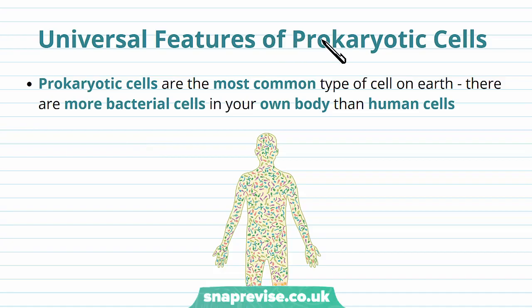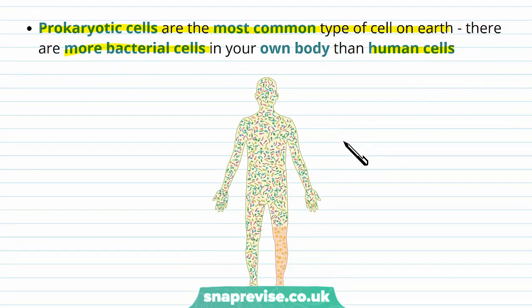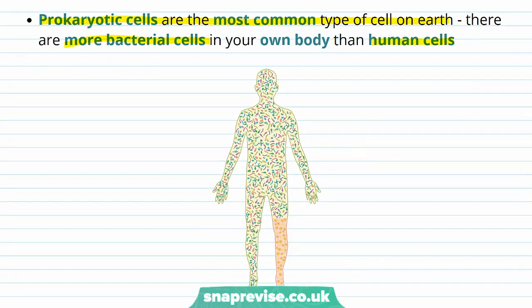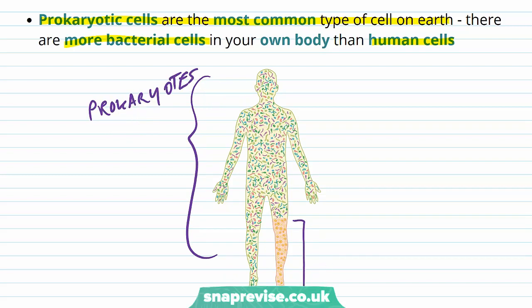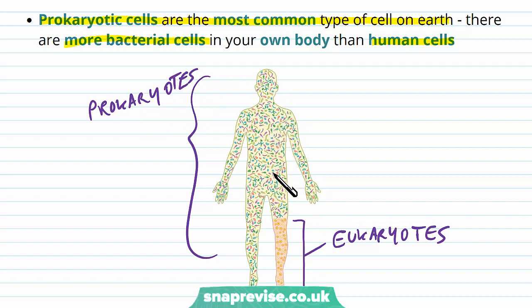Prokaryotic cells are slightly different to eukaryotic cells and they are actually the most common type of cell found on the planet. There are in fact more bacterial cells in your body than there are human cells. The colored dots here represent the proportion of prokaryotes, and this portion of the leg would be the eukaryotes. This is because so many bacteria and different types of prokaryotes live in our gut, on our skin, in our airways — everywhere pretty much. We live with them in a sort of commensal relationship where we both benefit from the other.